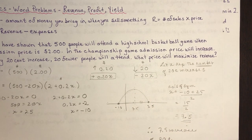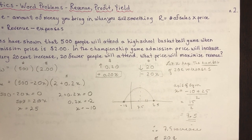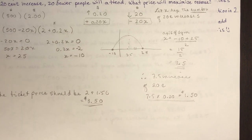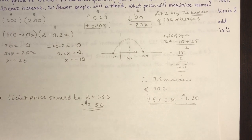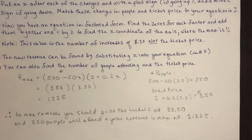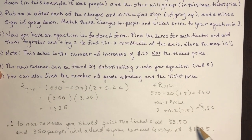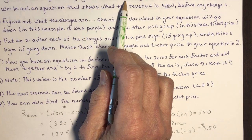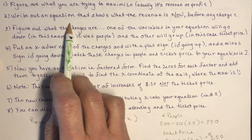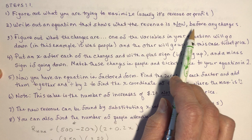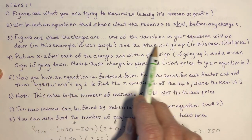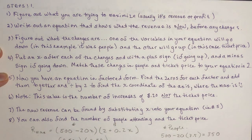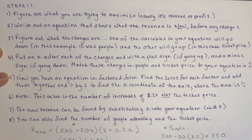The question asked what price will maximize revenue, so the only required answer was $3.50 per ticket. But you could also be asked how many people will go and what the maximum revenue is. So remember: figure out what you're trying to maximize, write an equation for now — let's do one more example.